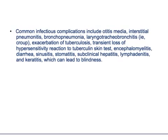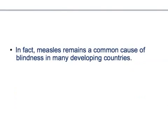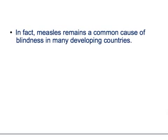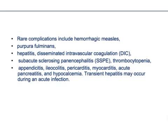Other complications include interstitial pneumonitis and bronchopneumonia. The most common cause of death in measles patients is pneumonia. Additional complications include sinusitis, stomatitis, subclinical hepatitis. Measles remains the most common cause of blindness in many developing countries. Rare complications include hemorrhagic measles, purpura fulminans, hepatitis, disseminated intravascular coagulation, and subacute sclerosing panencephalitis (SSPE). SSPE presents as a sudden change in behavior of the child and is a very dangerous long-term complication.